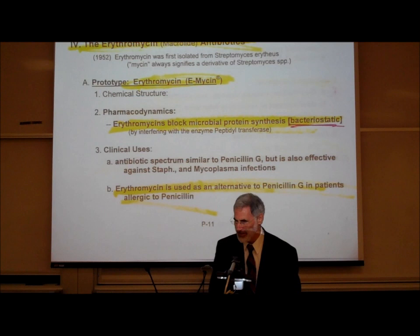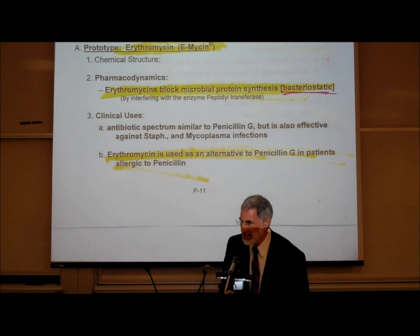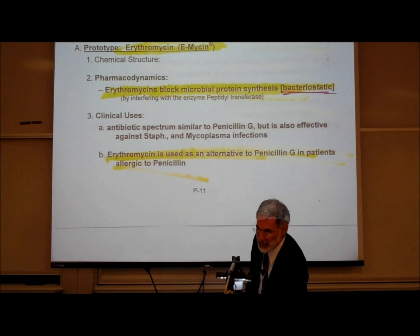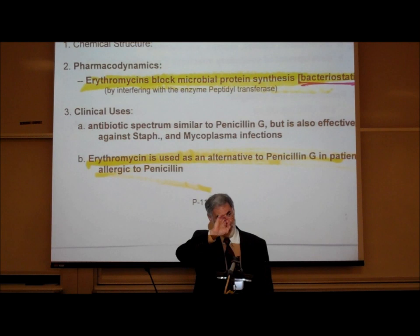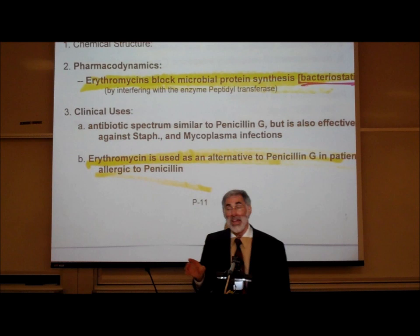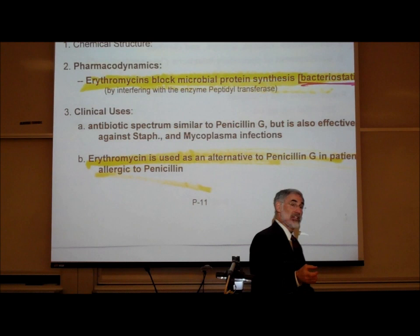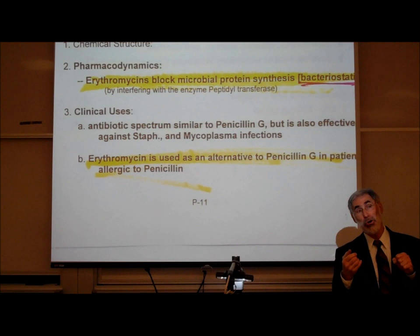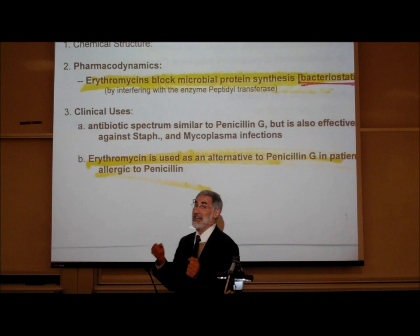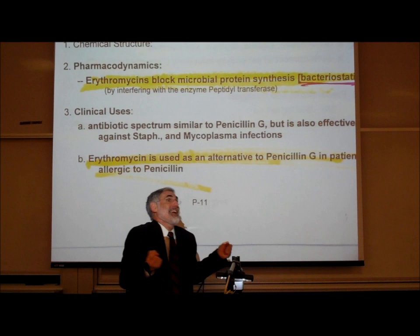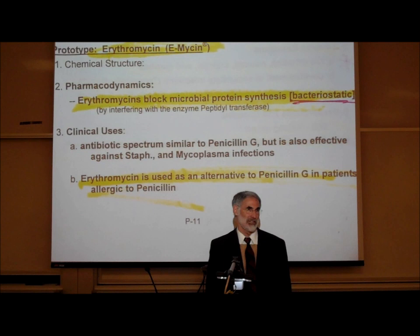Erythromycin's mechanism of action is blocking microbial protein synthesis. It has a spectrum of action similar to penicillin G, but it's also effective against staph and mycoplasma infections. A mycoplasma is a very small intracellular bacterium — an intracellular parasite that has no bacterial cell wall. The reason erythromycin is appropriate for mycoplasma is because penicillin and cephalosporins interfere with the bacterial cell wall, and mycoplasma doesn't have one, so penicillin and cephalosporins won't work against mycoplasma.